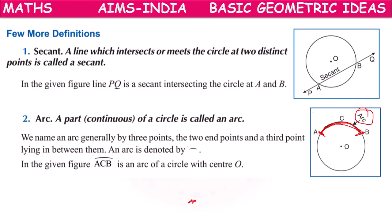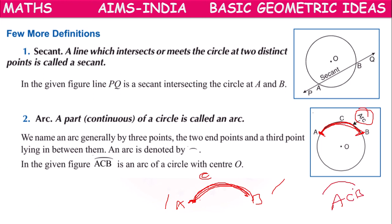Points A and B are the end points of the arc, and point C lies in between A and B on the arc. So arc is represented by three points. If we represent it as just AB, then it would be a straight line — that is why arc is represented by three points, where two are end points and the third lies between them on the arc.